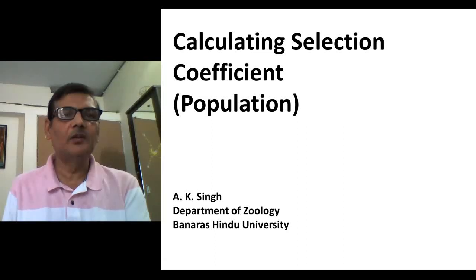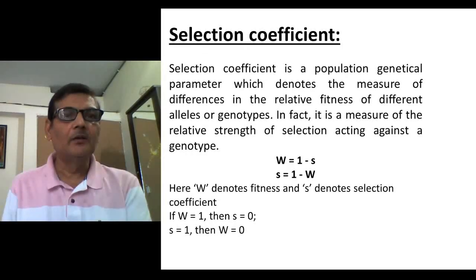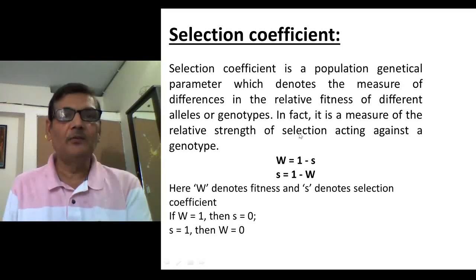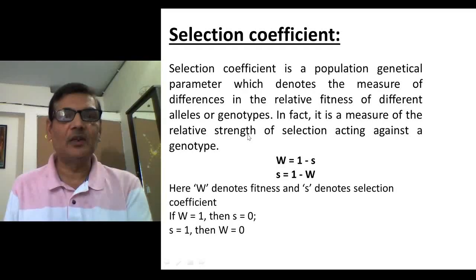Selection coefficient is one of the important parameters in the field of population genetics. It is a population genetical parameter which denotes the measure of differences in the relative fitness of different alleles or genotypes. In fact, it is a measure of the relative strength of selection acting against a genotype.